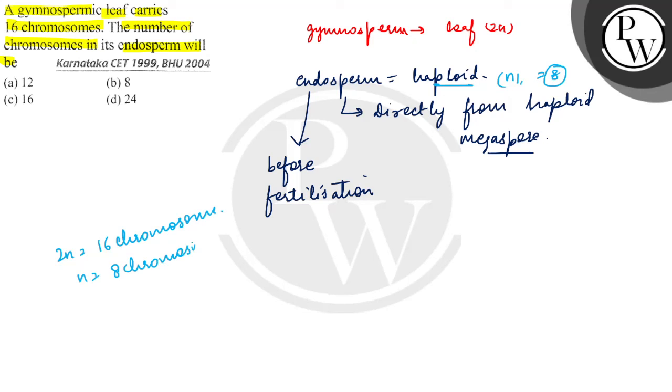If we look at the question's correct answer, we are asking how many chromosomes will be in the endosperm. Option B is 8, so option B is the right answer.